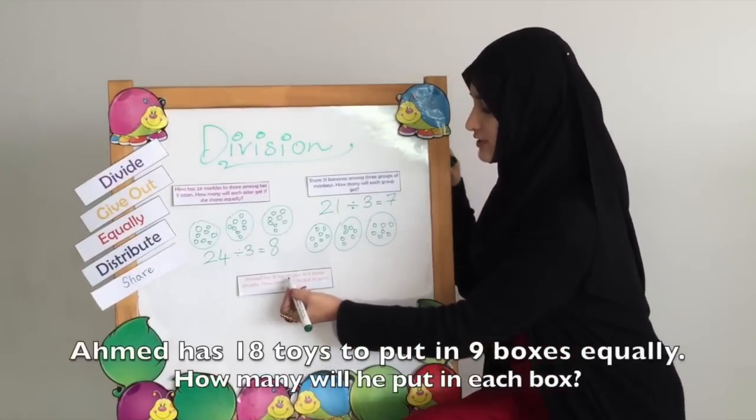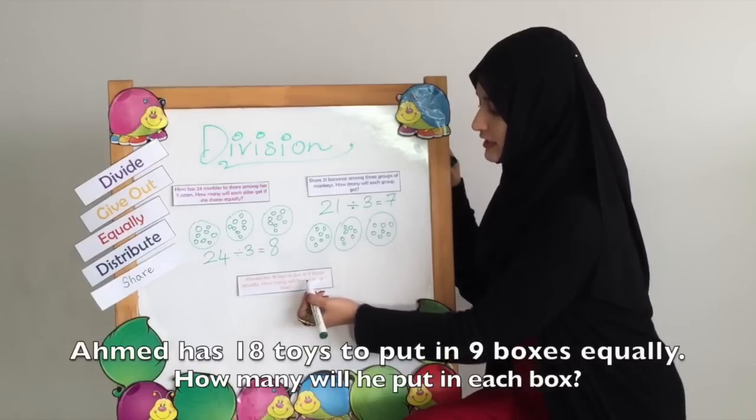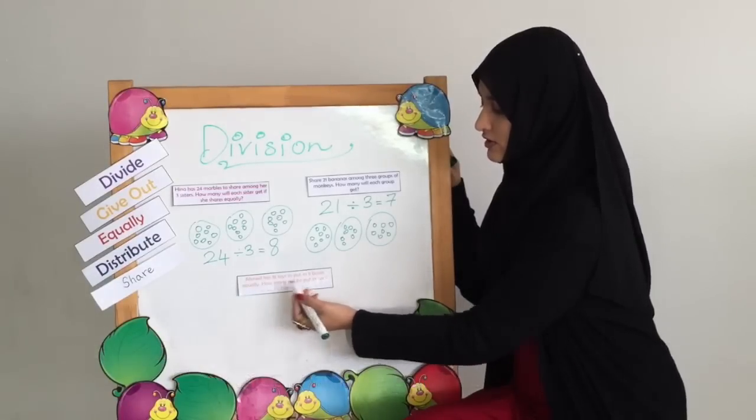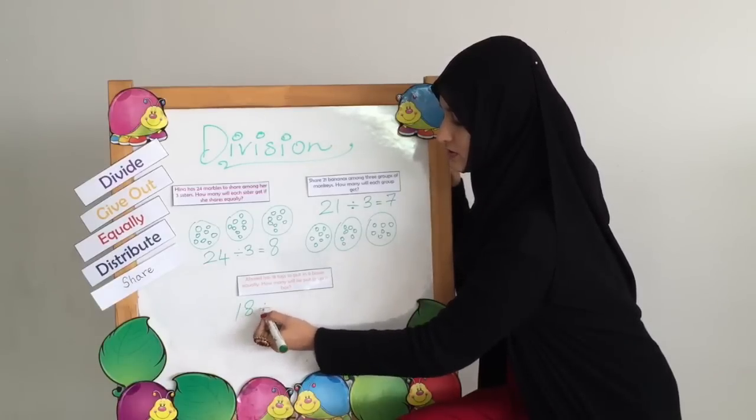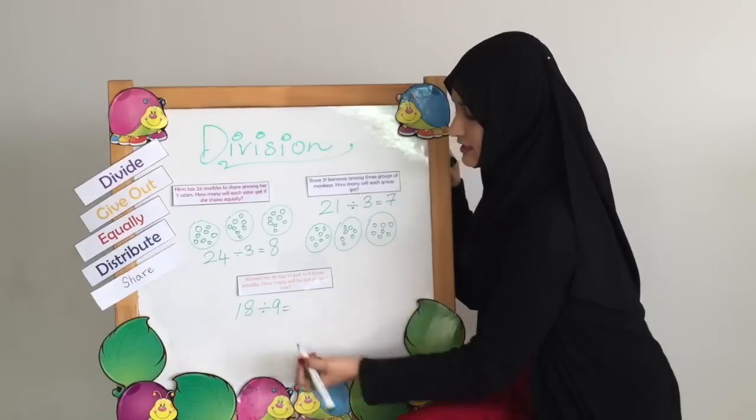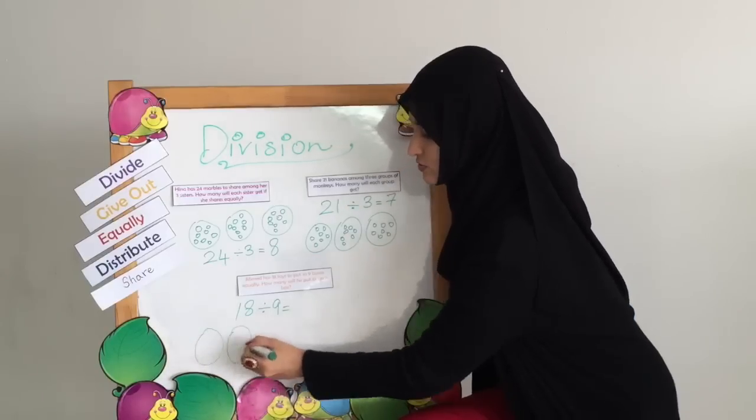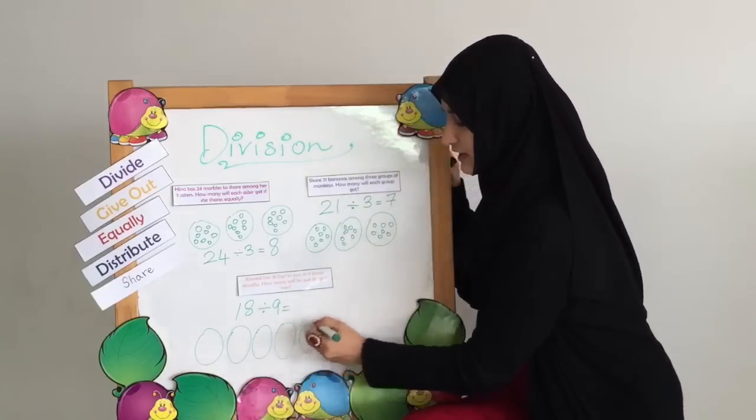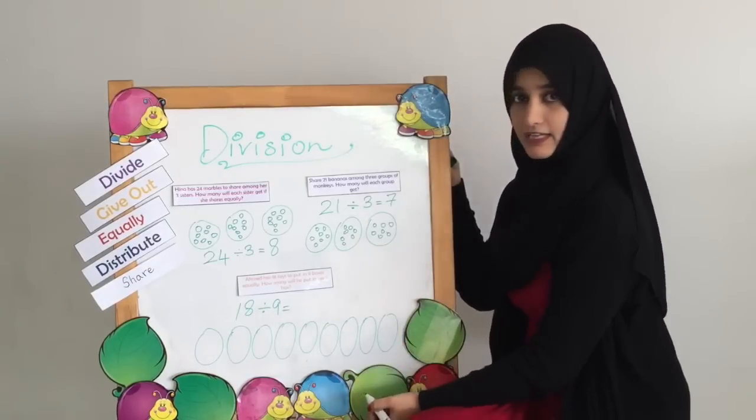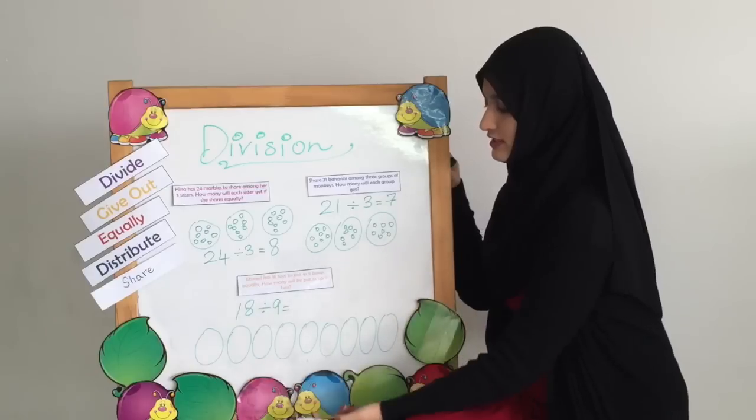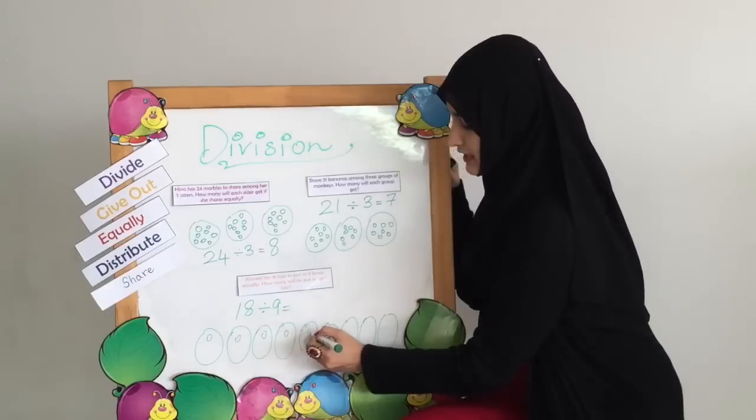Ahmed has 18 toys to put in 9 boxes equally. How many will he put in each box? Ahmed has 18 toys to distribute among 9 boxes equally. We are going to now draw the 9 boxes. One, two, three, four, five, six, seven, eight, nine. And now we are going to distribute the 18 toys equally. So we give out one each till we reach to 18.